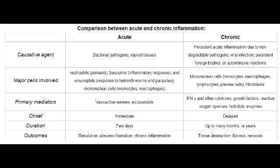Name all the things that mediate acute inflammation. Acute inflammation is mediated by neutrophils, eosinophils, and antibodies. Describe the onset and duration of acute inflammation. Acute inflammation has a rapid onset, starting from seconds to minutes, and it can last for minutes to days.